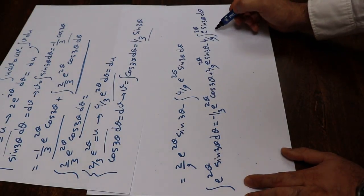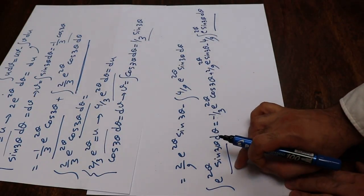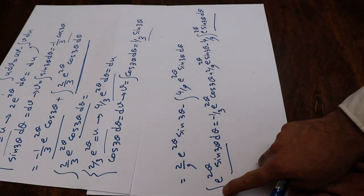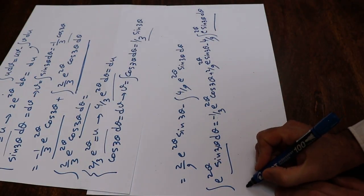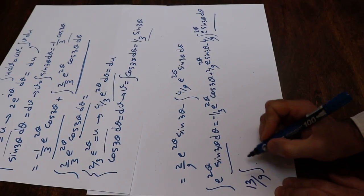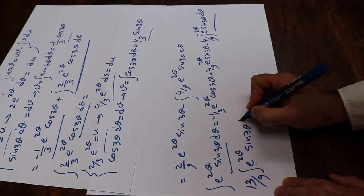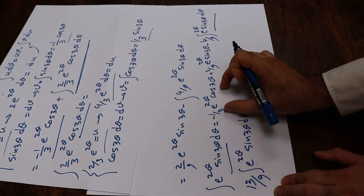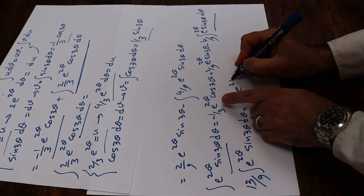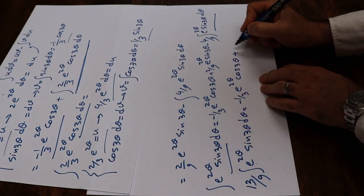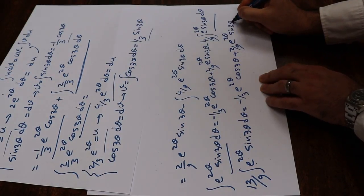Now, the integral on the right-hand side is the same as the original integral on the left. Bringing it to the other side and adding: the coefficient 1 plus 4/9 gives 13/9. So 13/9 times the integral of e^(2θ) sine 3θ dθ equals minus 1/3 · e^(2θ) cosine 3θ plus 2/9 · e^(2θ) sine 3θ.